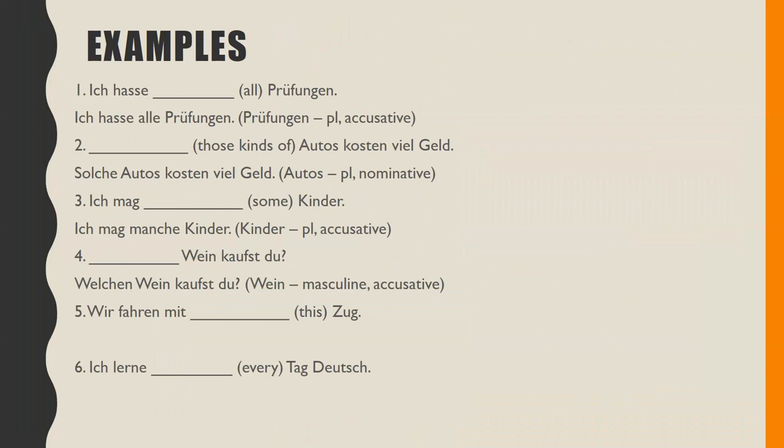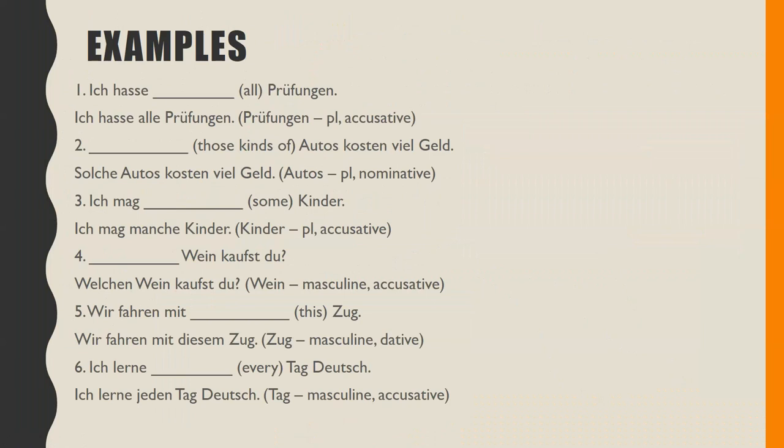For number five: 'Wir fahren mit diesem Zug.' 'Zug' is masculine and dative — it's dative because of the preposition 'mit.' 'Ich lerne jeden Tag Deutsch.' 'Tag' is masculine and accusative. Not all examples are masculine or plural; these are just the examples on this page. For the neuter example, go back to the previous slide and look at 'Buch.' If you have any questions, you can always ask in class.